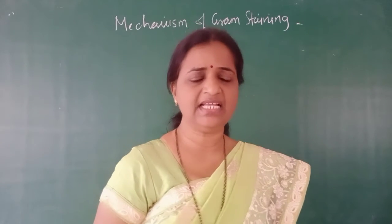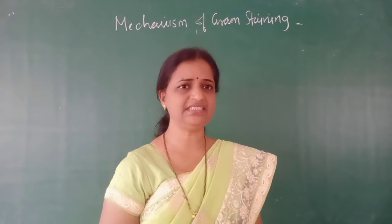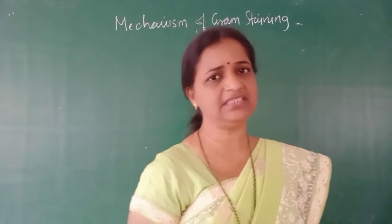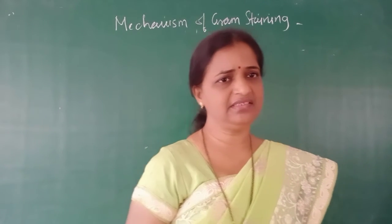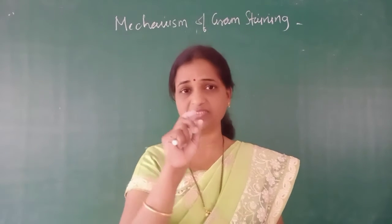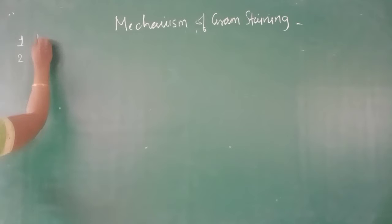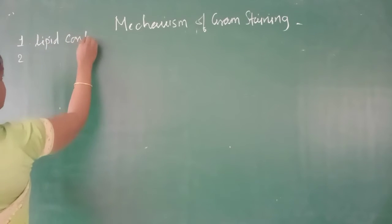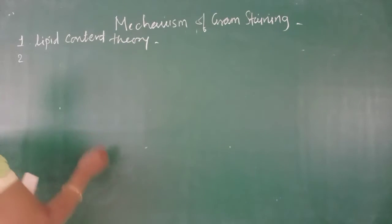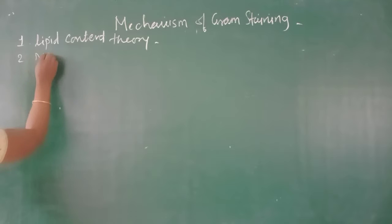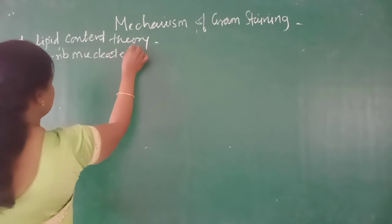Hello students. In the last lecture we studied the first two mechanisms of Gram staining. Now let us see the further two mechanisms which explain the procedure and observation behind Gram staining. The first two mechanisms were: the liquid content theory and the magnesium ribonucleate theory, which we already discussed in the last lecture.